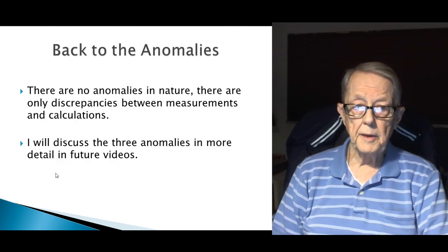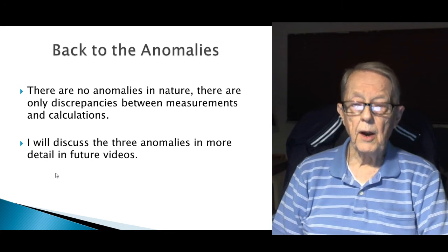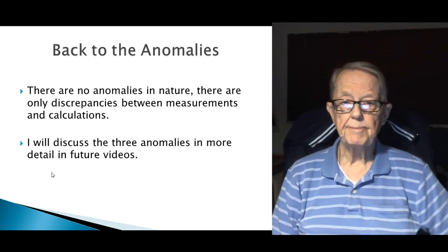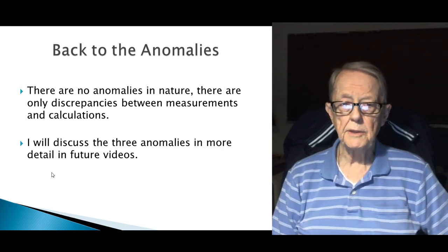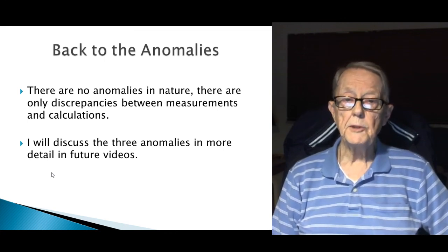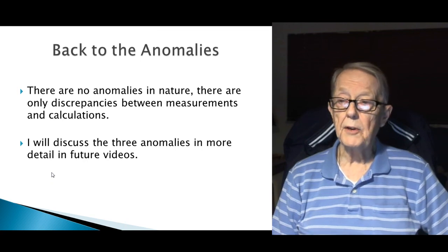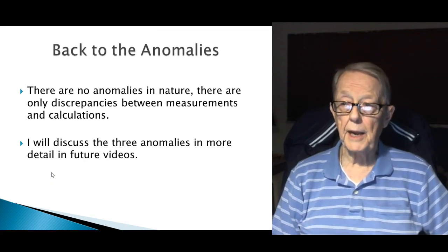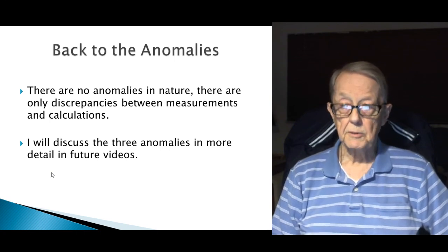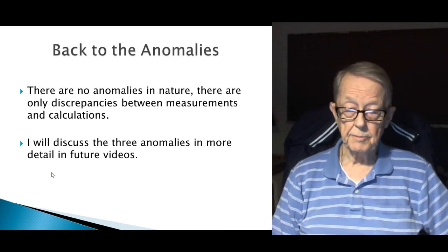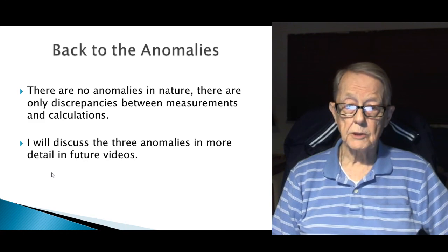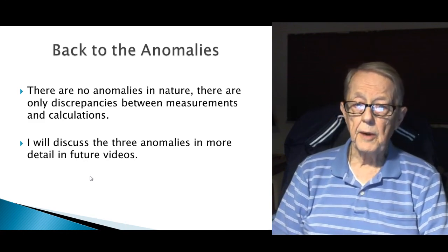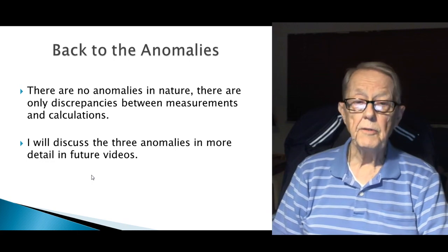Back to the anomalies. There are no anomalies in nature. Nature doesn't make mistakes. Nature does what nature does. There are only discrepancies between measurements and calculations or between measurements and our ideas of what's supposed to happen. Nature doesn't make mistakes. It works the way it's supposed to. I will discuss the three anomalies in more detail in future videos.